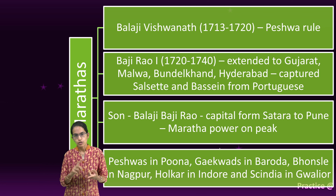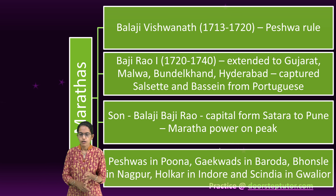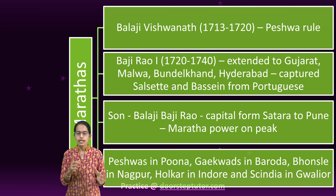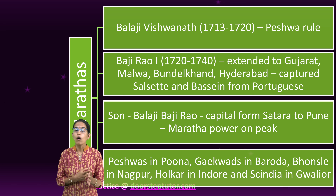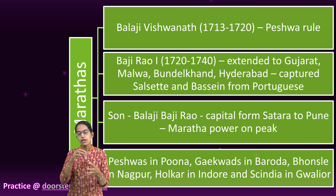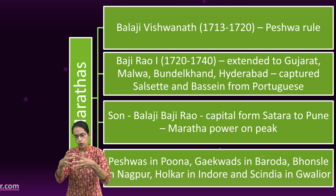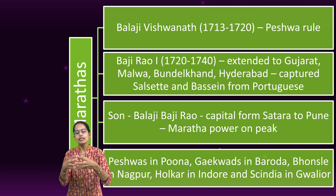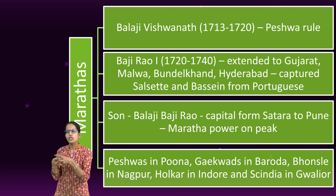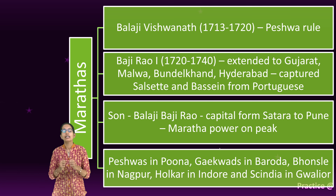These five confederacies together formed the Maratha political power: the Peshwas of Pune, the Gayakwars of Baroda, the Holkars of Indore, the Sindhias of Gwalior and the Bhonsles of Nagpur. Each under a Sardar unit head came close to one another, but they were constantly fighting among themselves, looting and terrorizing people for collection of taxes.